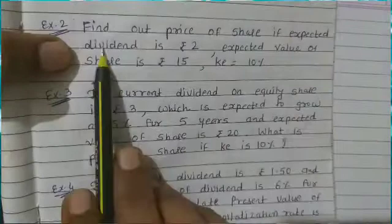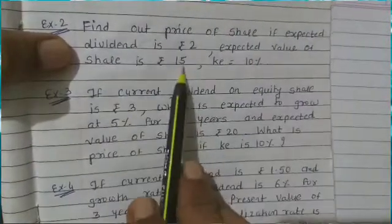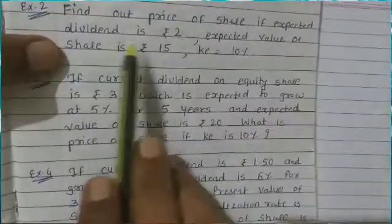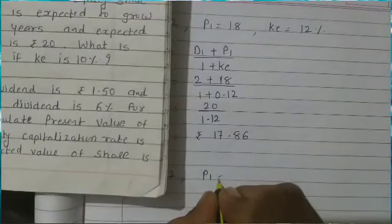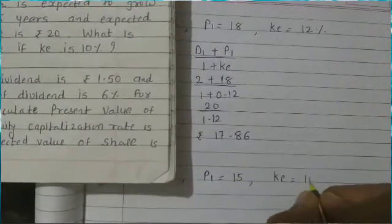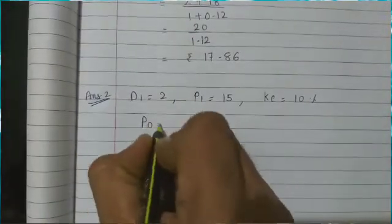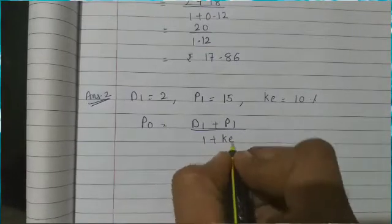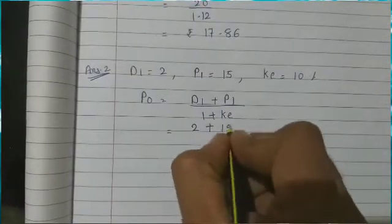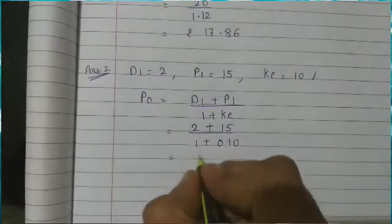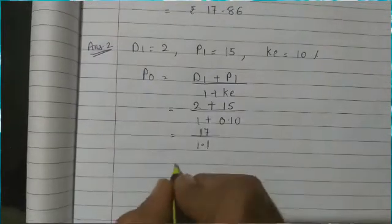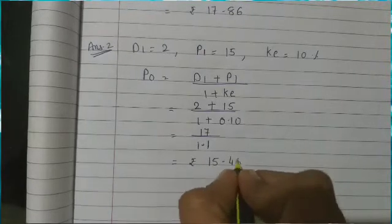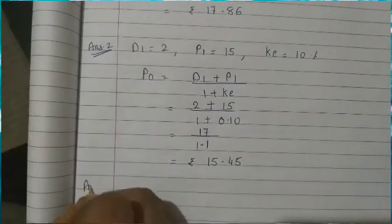Answer number 2: Find out the price of the share if expected dividend D1 is Rs. 2, expected value of the share P1 is 15, and K is 10%. Since D1 and P1 are directly given, we use: P0 = (D1 + P1) / (1 + K) = (2 + 15) / (1 + 0.10) = 17 / 1.1 = Rs. 15.45.